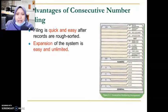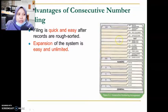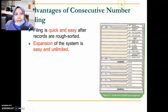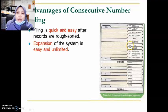The second advantage is that expansion of the system is easy and unlimited. For example, if today we have up to file number 260, tomorrow if we want to add more, we just add at the back. We will not do interfiling — meaning we cannot insert a new file between 253 and 254, because that number has already been assigned to a particular folder.